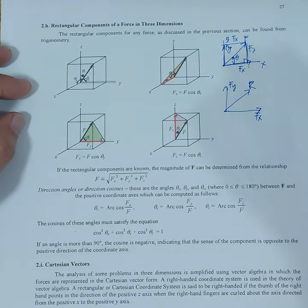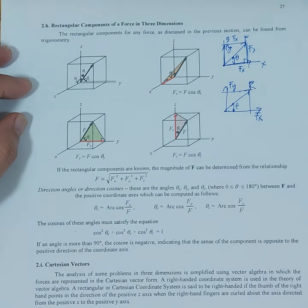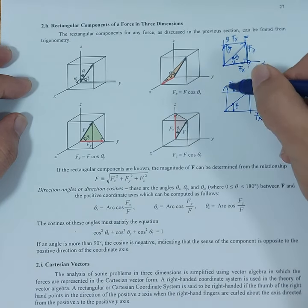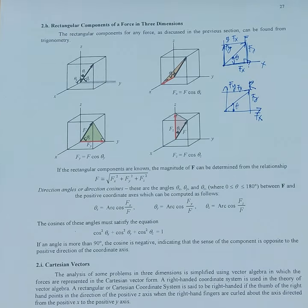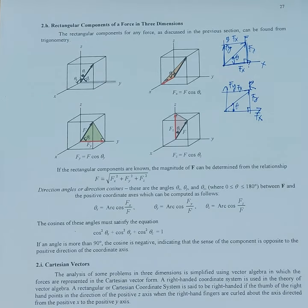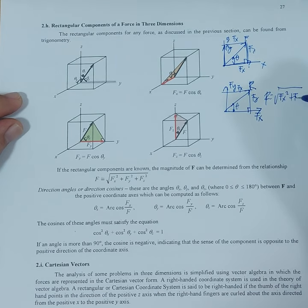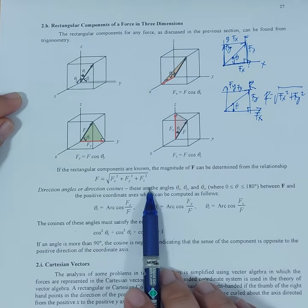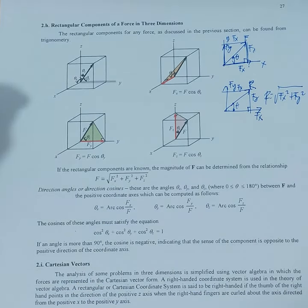For the resultant in two dimensions, using the parallelogram method with given Fx and Fy, since it's a right triangle, we simply use the Pythagorean theorem: the resultant is the square root of Fx squared plus Fy squared. Ganun din sa three dimensions: F is equal to the square root of Fx squared plus Fy squared plus Fz squared.